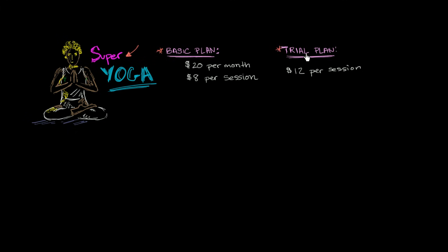The trial plan — if you just want to try things out — you can come to any of the sessions, and it's going to cost you $12 per one-hour session. But if you like what you're doing, you might want a monthly membership: the basic plan. That's $20 per month, and then you get a discount — it'll only be $8 per session.